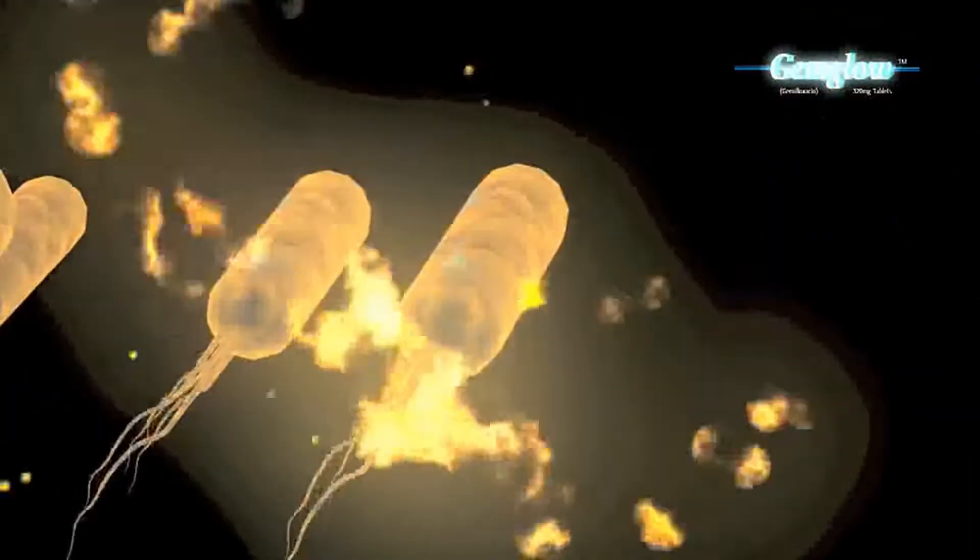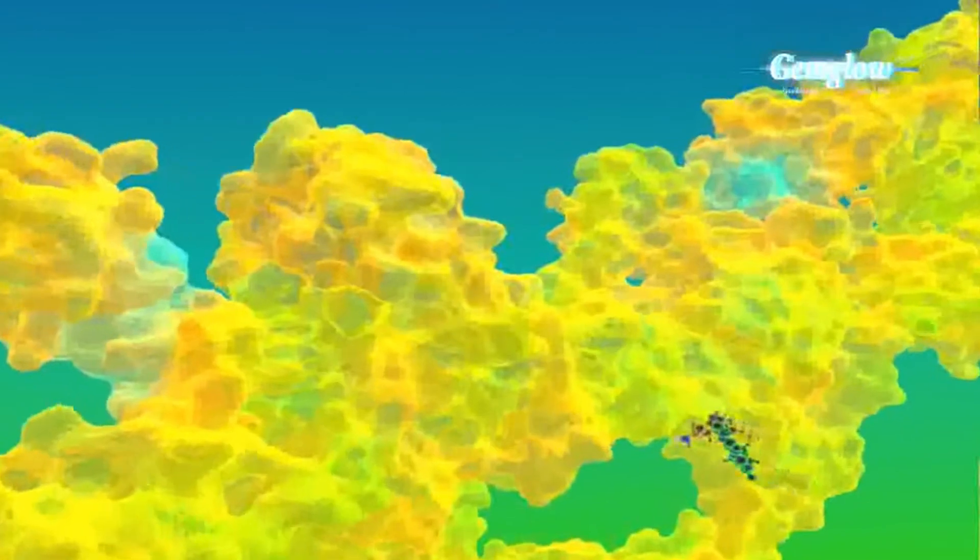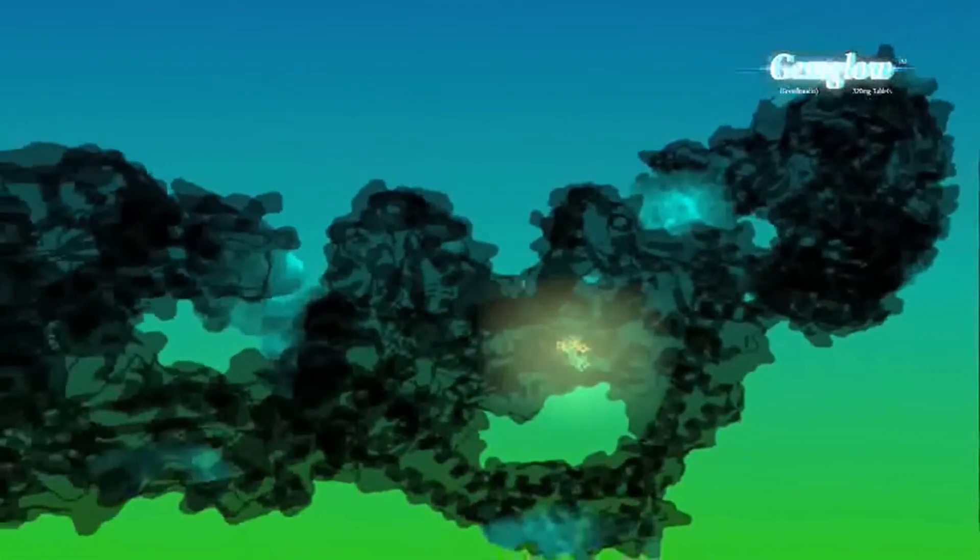Gemglal inhibits the DNA gyrase enzyme thus resulting in tightly coiled and compact DNA. As a result, DNA cannot open up for replication and for the synthesis of enzymes vital for bacterial cell.